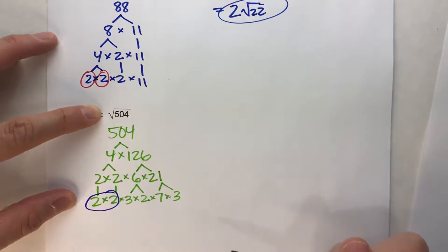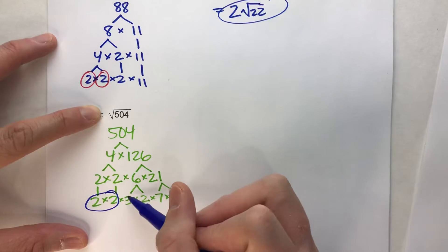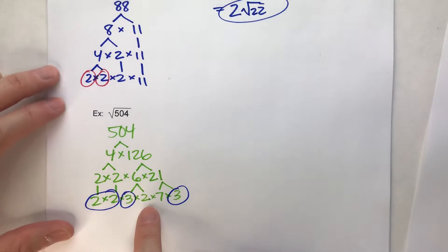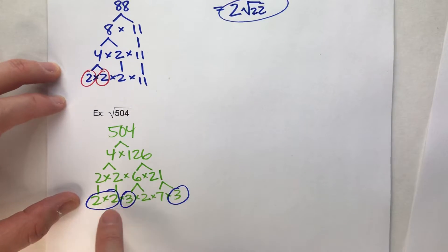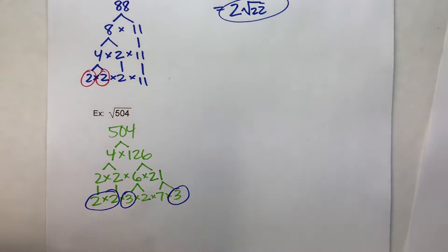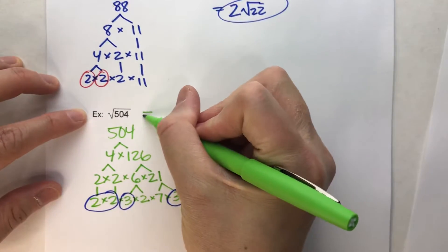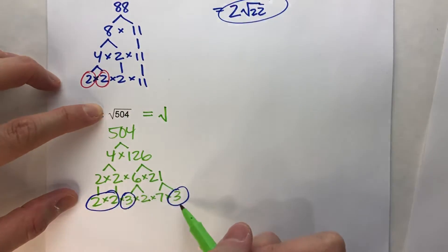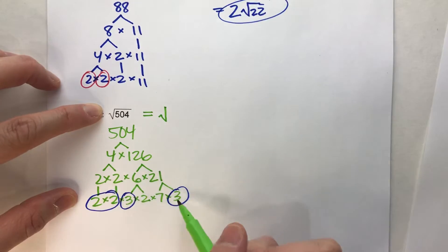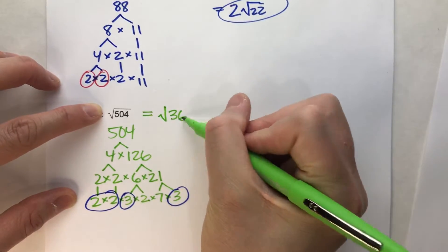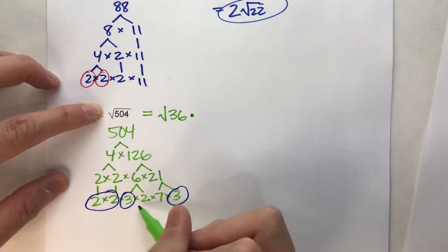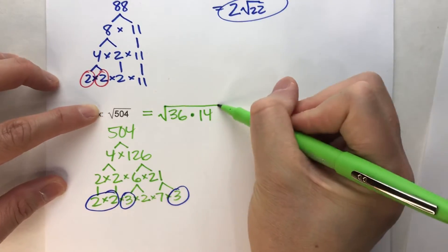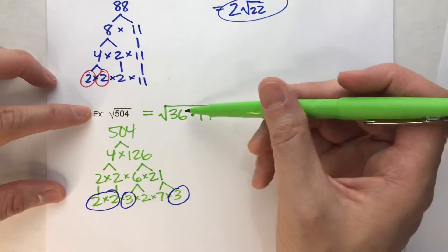Now I can find the biggest perfect square that goes into 504 by multiplying my pairs. There's a pair of 2s, and there's also a pair of 3s. There's no other pairs after that — there's another 2, but again, no trios for square roots, we just want pairs. So the biggest perfect square that goes into 504 is all the pairs multiplied together: 2 times 2 times 3 times 3, which is 36. And all the leftovers multiplied together: 2 times 7, which is 14. So I've just broken 504 down to 36 times 14.